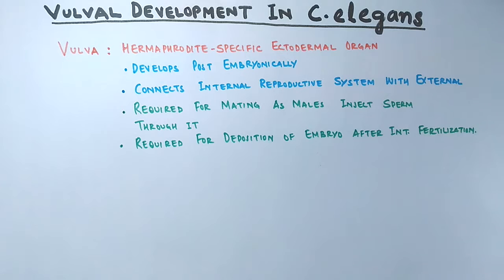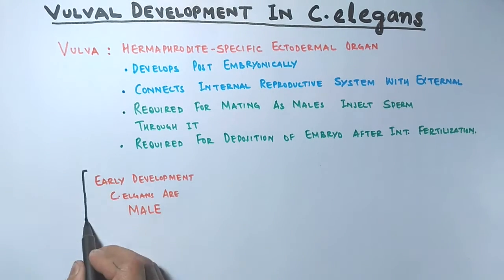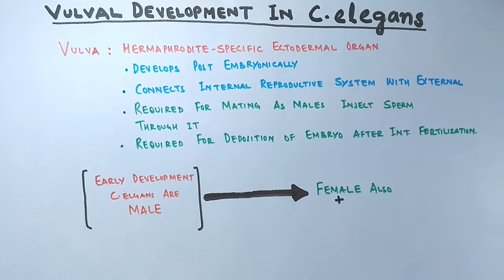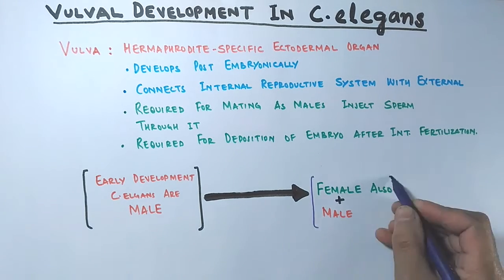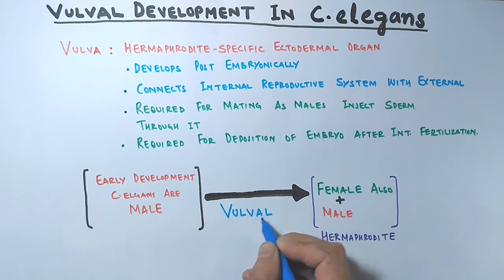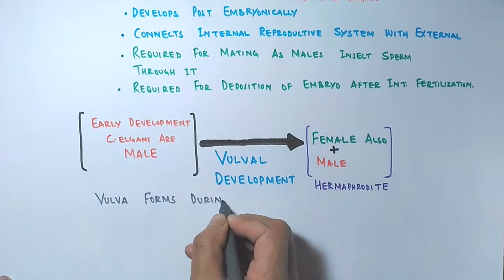The vulva develops post-embryonically through morphogenesis. In early development, C. elegans are male, but later in the developmental process most transform into females while also retaining male organs — thus we call them hermaphrodite organisms. It is in these hermaphrodite organisms where the vulva is needed for the above-mentioned functions. The vulva forms during the L3 larval stage of development.